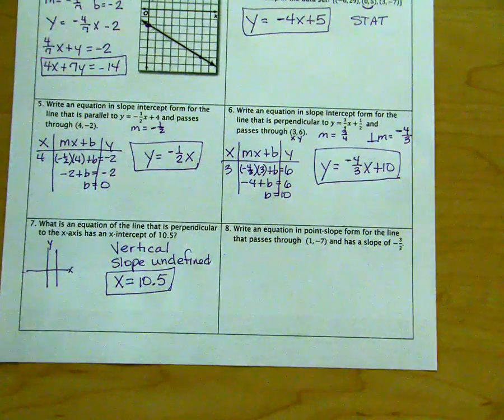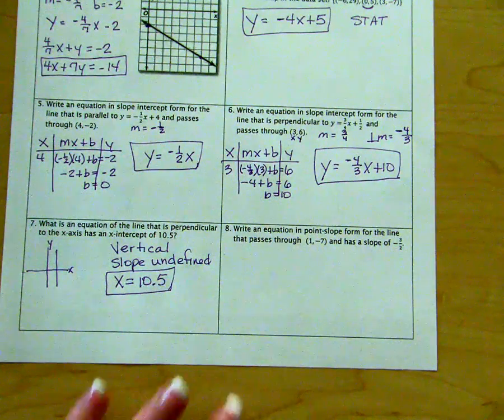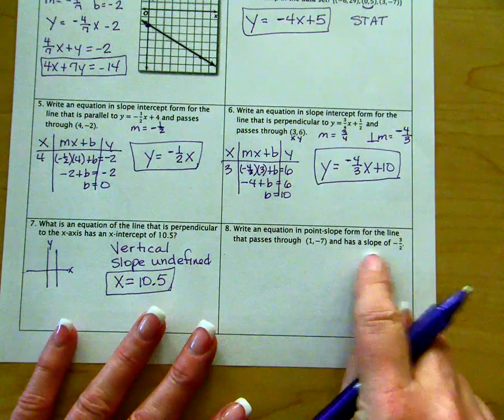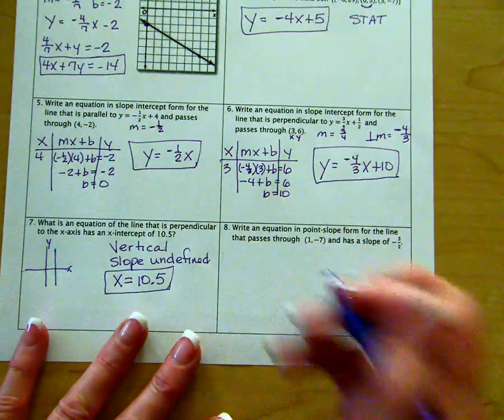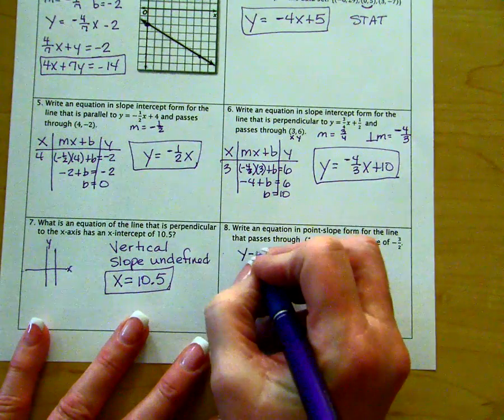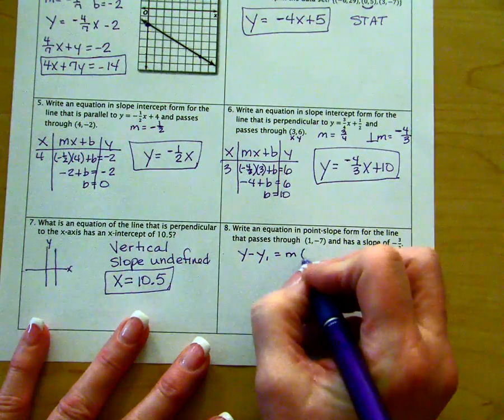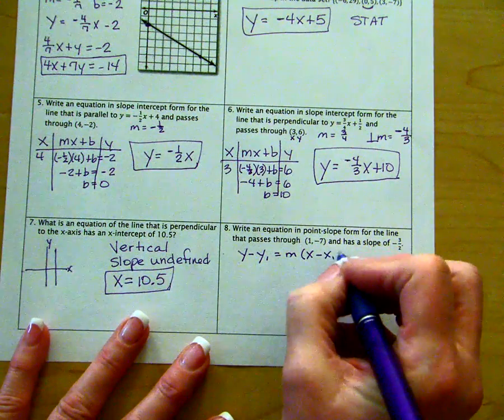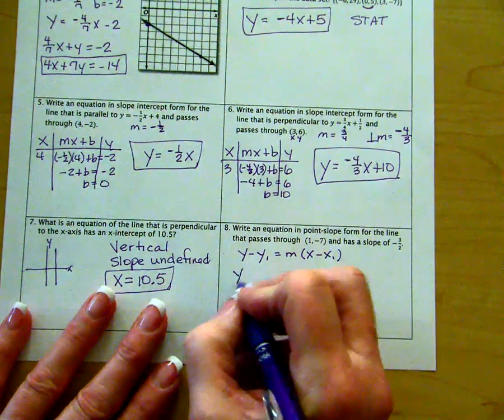Number eight. Write an equation in point-slope form for the line that passes through this point and has a slope of negative three-halves. So remember point-slope form is y minus y-sub-1 equals m times (x minus x-sub-1). First, set up your skeleton.